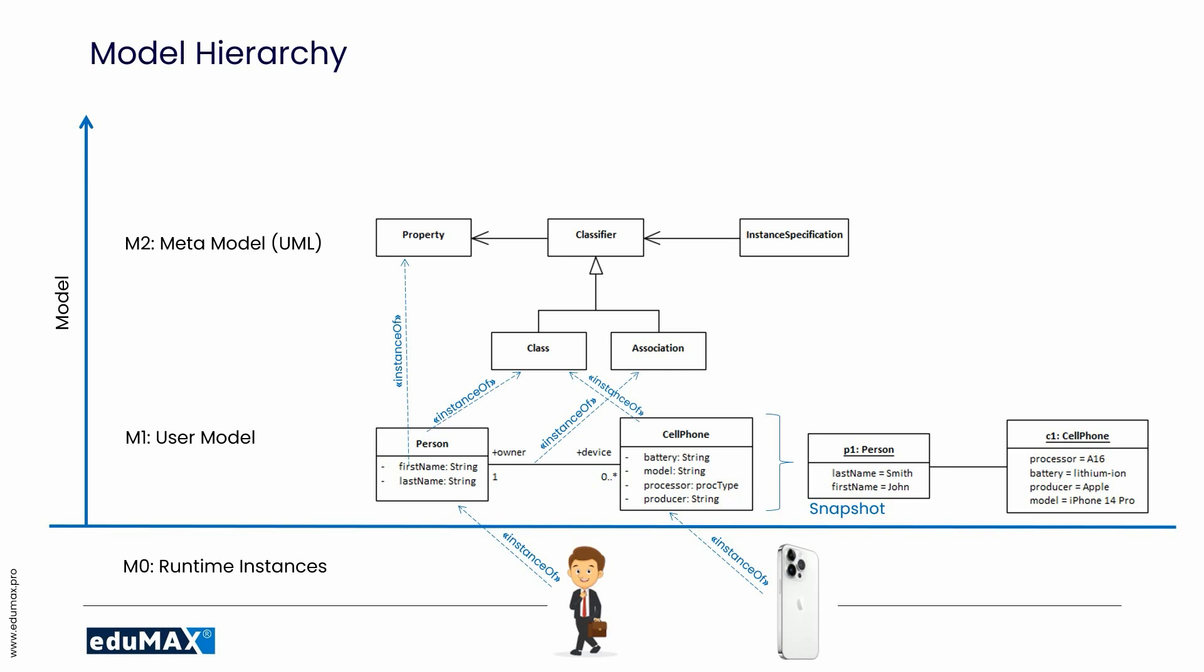We can specify this is a property. Level M2 is like a template or a recipe for creating good, proper UML diagrams. And the instance specifications are instances of it as well.